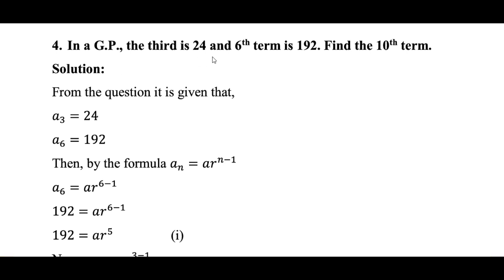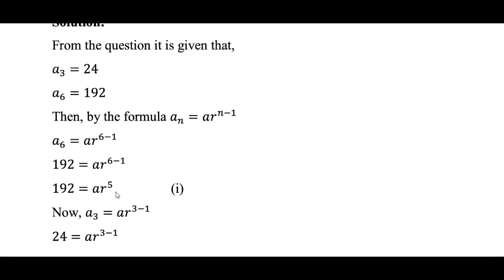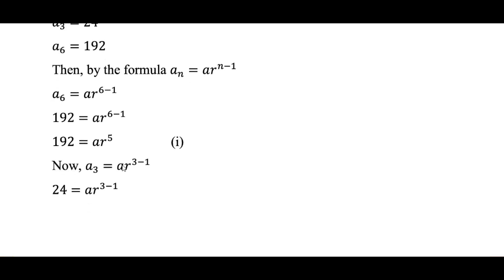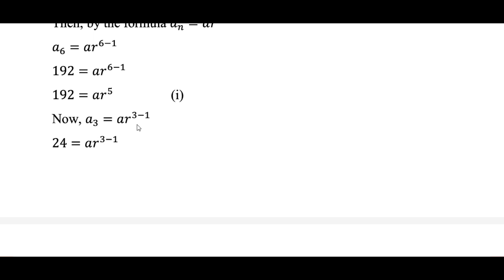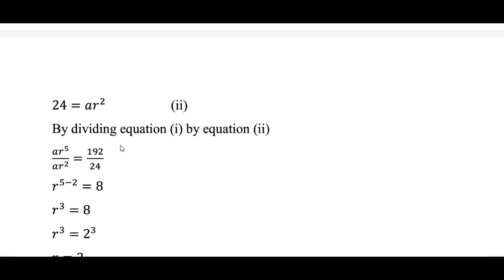In a GP, the 3rd term is 24 and the 6th term is 192; find the 10th term. So A3 = 24 and A6 = 192. Using the formula AN = AR to the power n minus 1: AR to the power 5 equals 192 — equation 1. And AR squared equals 24 — equation 2.